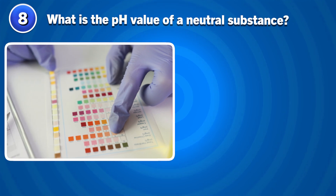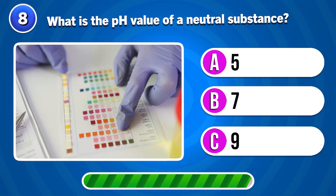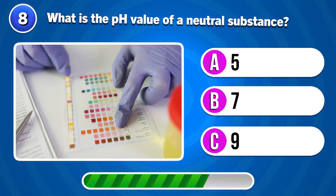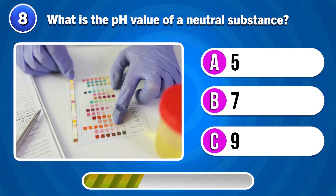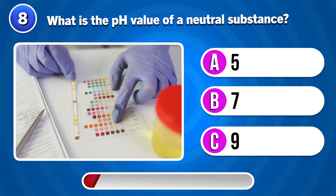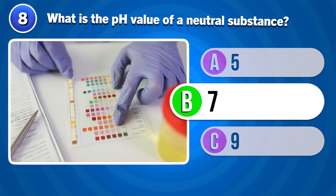What is the pH value of a neutral substance? It's 7.